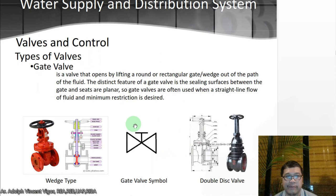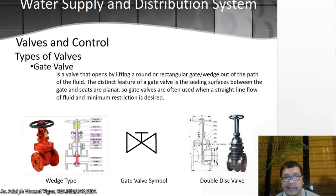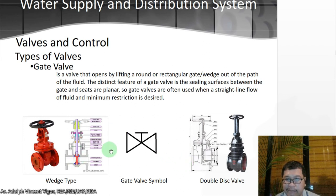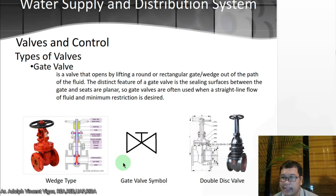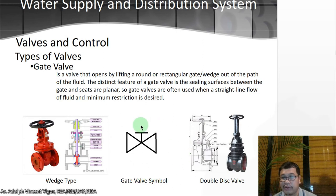A gate valve is a valve that opens by lifting a round or rectangular wedge out of the path of the fluid. The sealing surfaces between the gate and the seats are planar. Gate valves are often used in straight-line flow of fluid where minimum restriction is required. This is the symbol for a gate valve — it's the kind of valve commonly used in water supply and distribution of residential buildings here in the Philippines. Take note of the symbol, as it's important when doing plumbing plans.